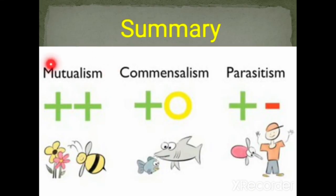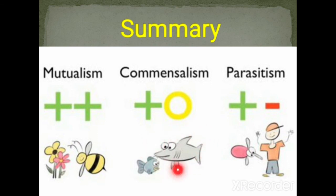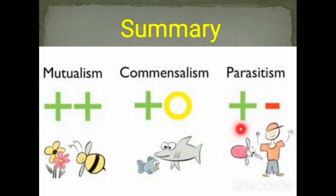To summarize: mutualism is a relationship in which both organisms benefit from each other. Commensalism is a relationship in which one organism benefits and the other is neither harmed nor benefited. Parasitism is a relationship in which one organism benefits — like the mosquito sucking blood — and the other is harmed, suffering loss.